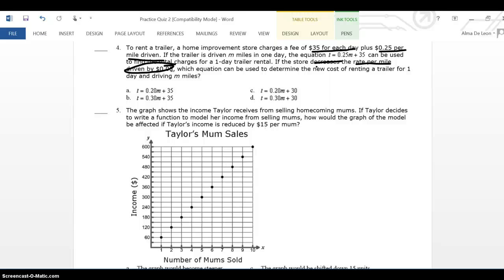The only answers that have $0.20 for the slope are A and C, so I cross out B and D. And then the next thing is, the problem does not tell me anything about changing the initial fee that the store charges. So, I'm not going to change that $0.35 at the end. I'm going to leave it the same. And the only one that does that is A, so my answer is A.